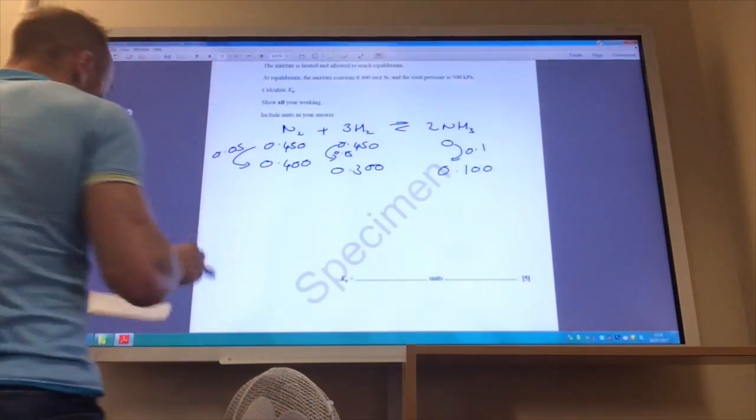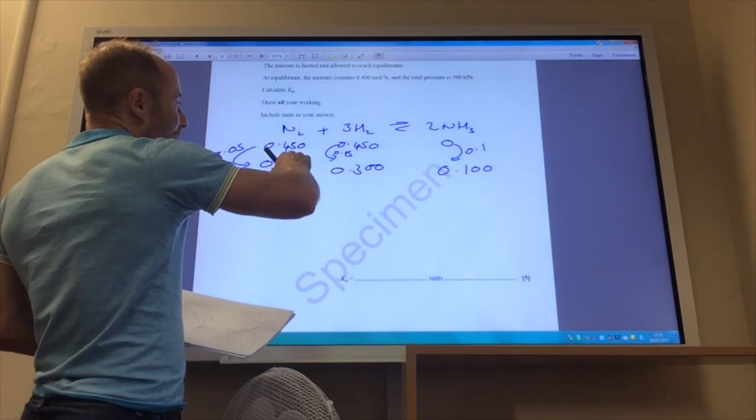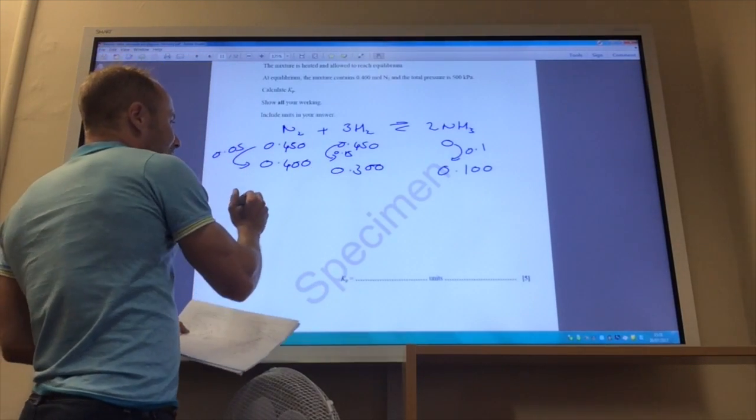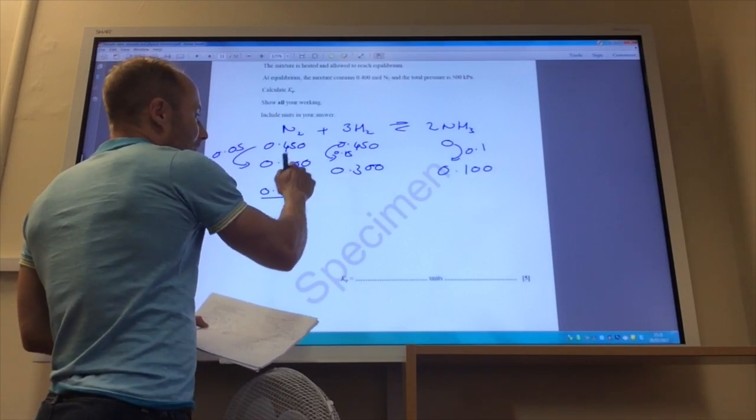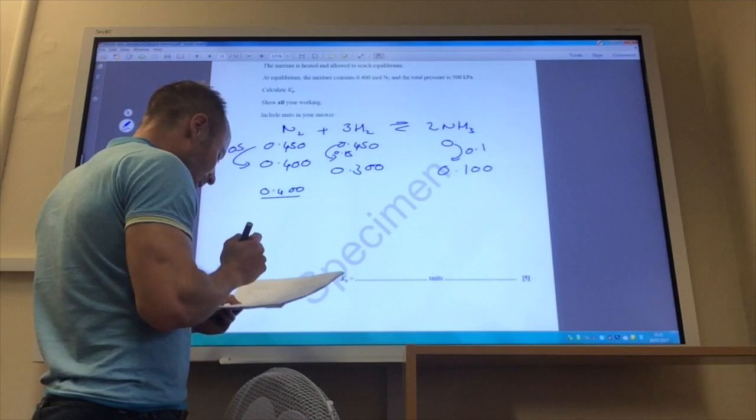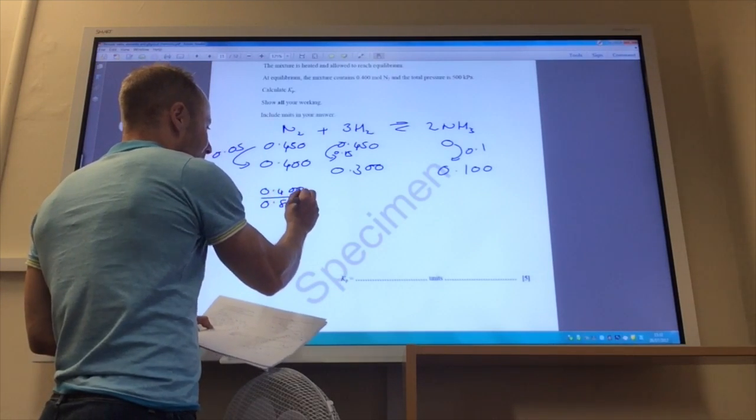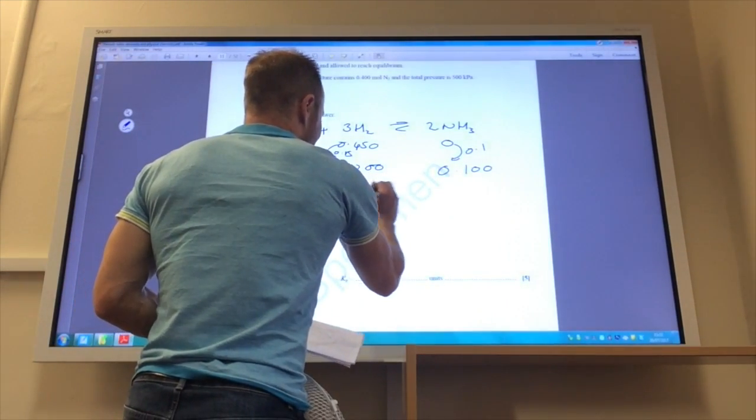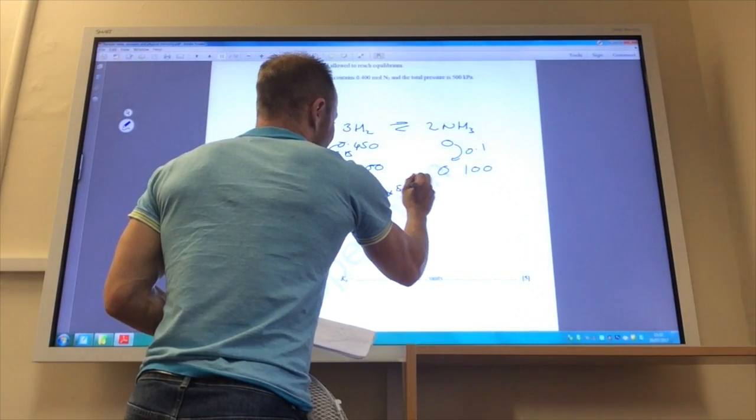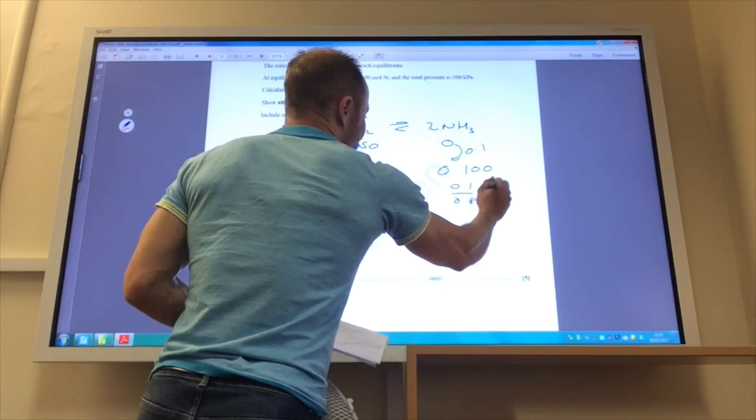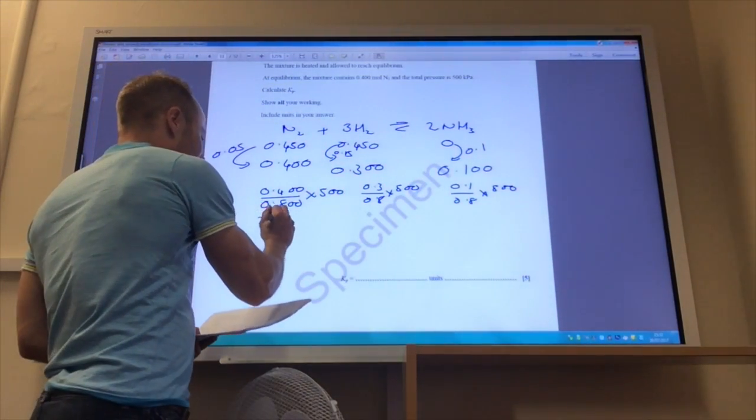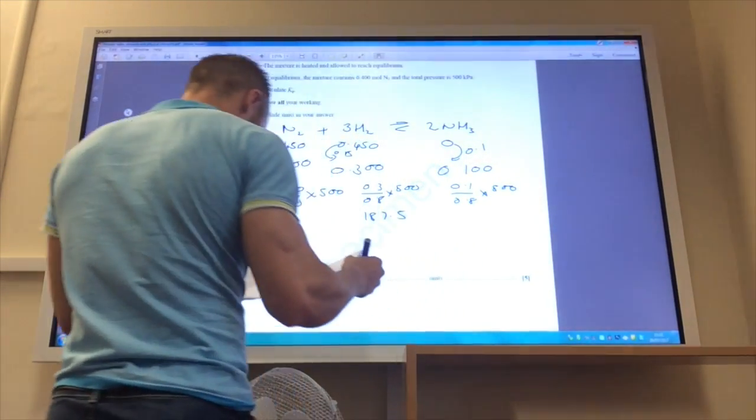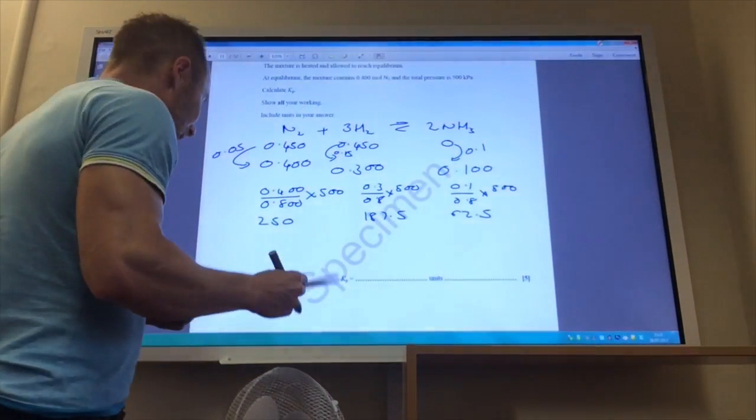Okay, so I now need to calculate my partial pressures, which is the moles of each gas over the total number of moles times the pressure. So let's do that. So for nitrogen it's 0.4, if we add all these up together, 0.4, 0.3, and 0.1, we get to 0.8. And the pressure it's told me is 500 kilopascals. This is going to be 0.3 over 0.8 times 500, and this will be 0.1 over 0.8 times 500 for the partial pressures. That comes to 250, that comes to 187.5, and finally this comes to 62.5.